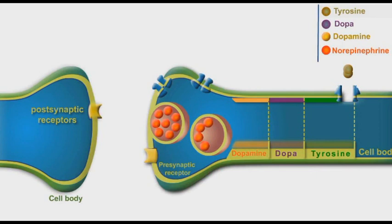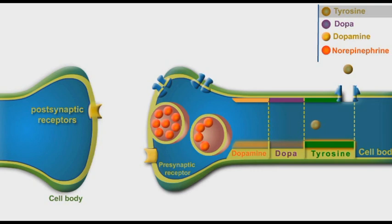Synthesis of norepinephrine neurotransmitters starts by the uptake of extracellular tyrosine molecules through sodium-linked carriers in the adrenergic neuronal axoplasm. In the cytoplasm, the tyrosine molecules are hydroxylated by tyrosine hydroxylase into dihydroxyphenylalanine molecules, known as DOPA molecules.